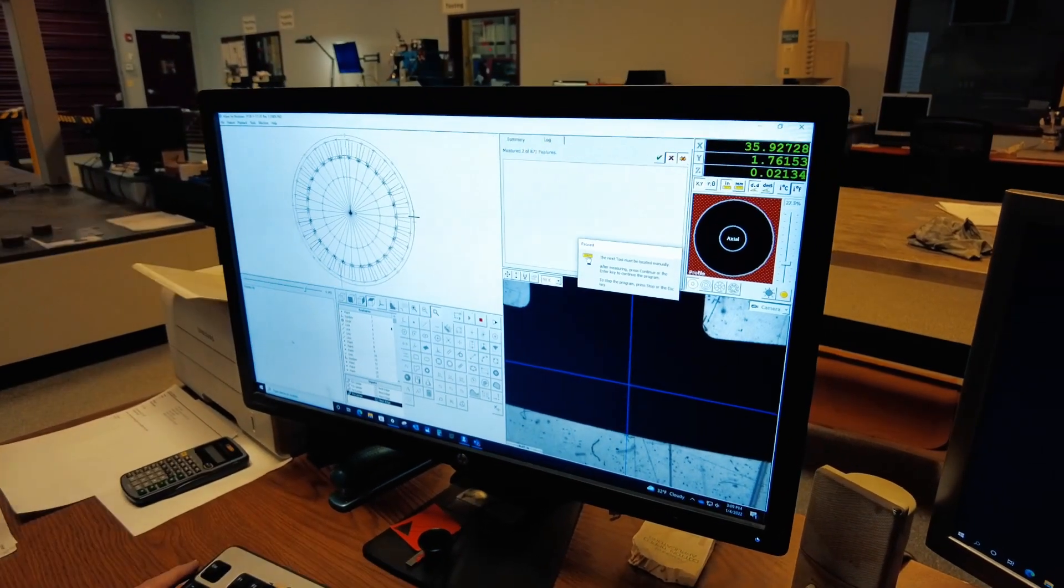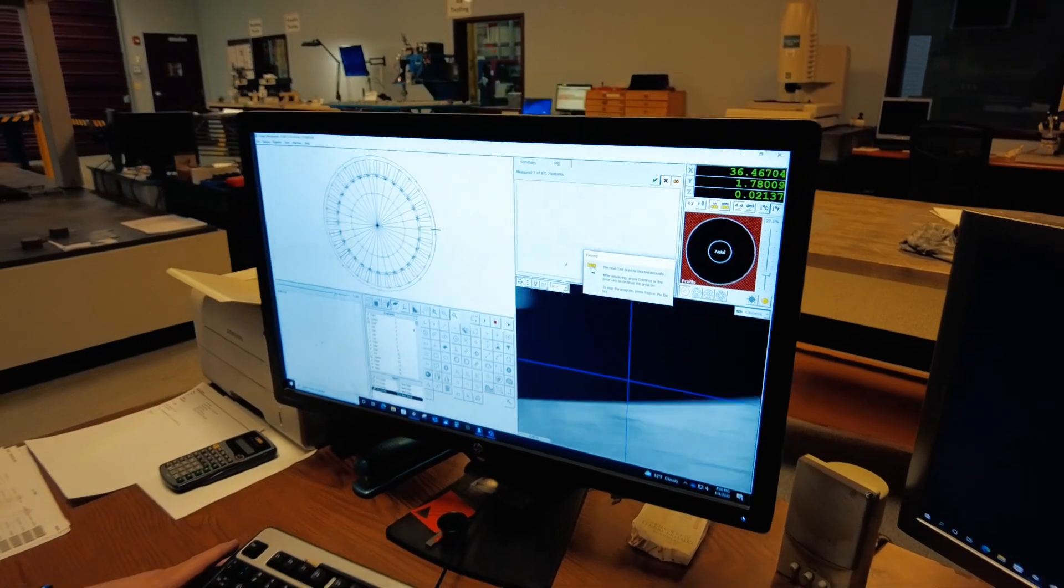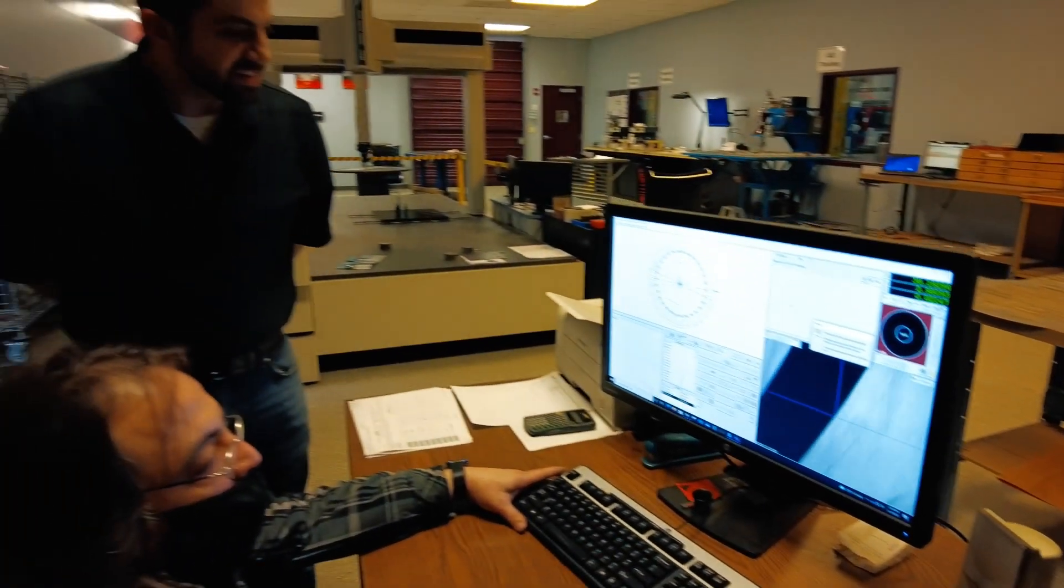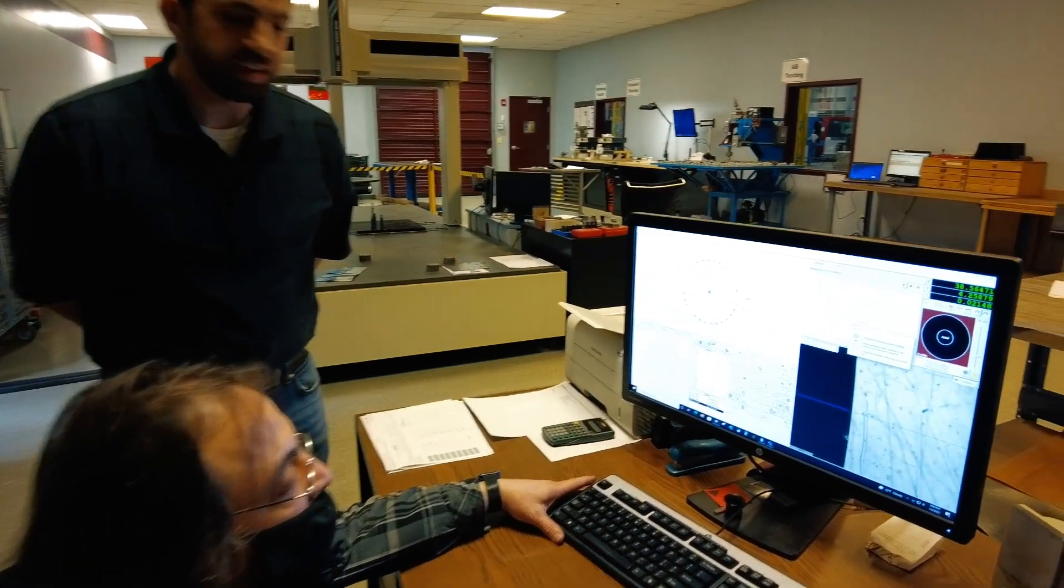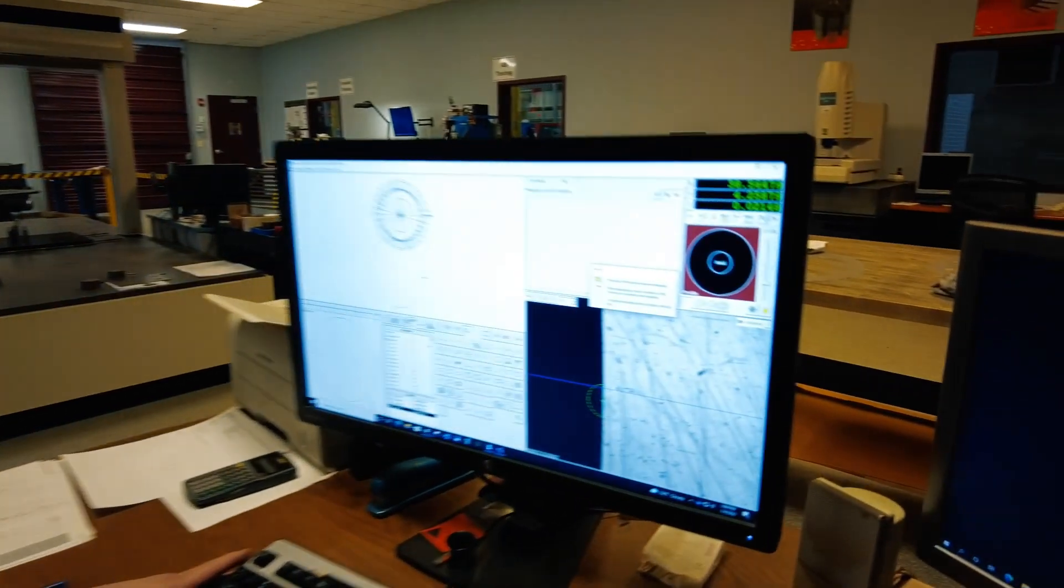Here he's walking along the part to identify certain features. In this case, he's telling the machine where the outer diameter is by placing points all along the outer diameter as established in our program.